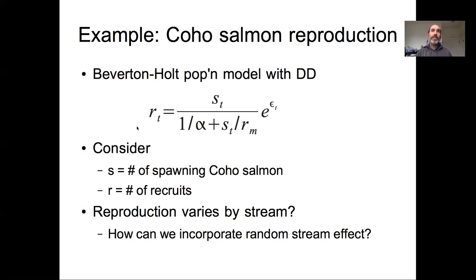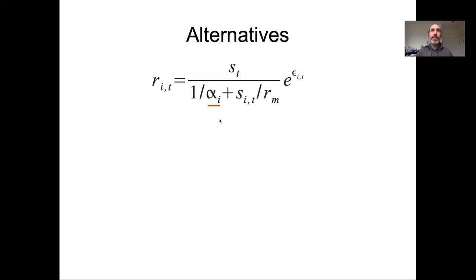In practice, this data set for the Pacific Northwest had data from multiple streams where the reproductive output varied by stream. So the question would be, how do we incorporate this random stream effect into this nonlinear model?